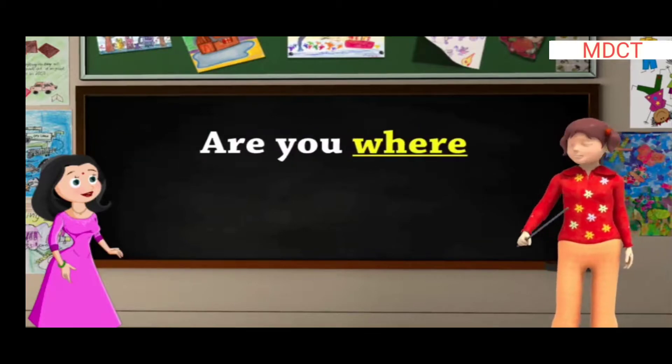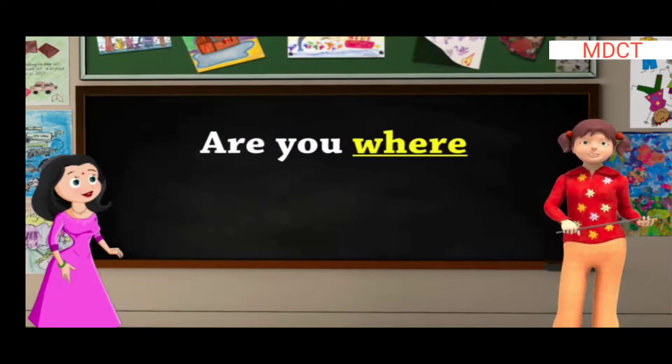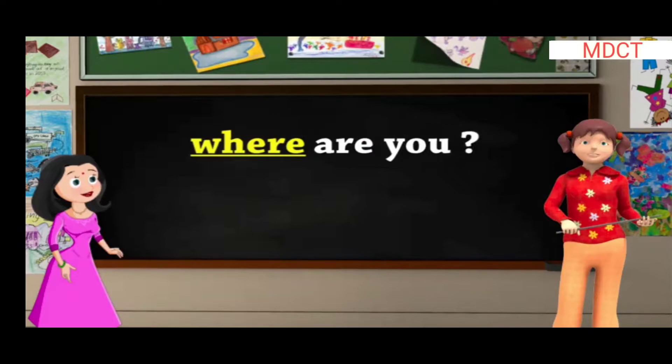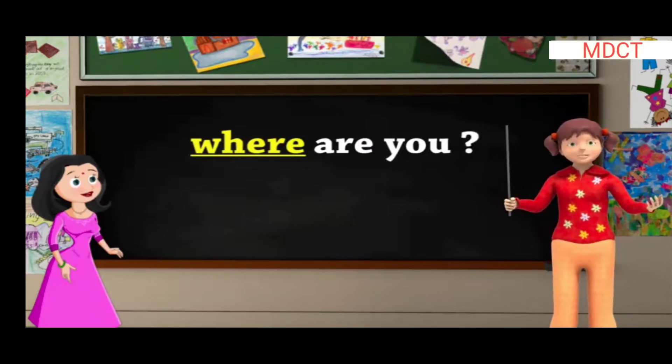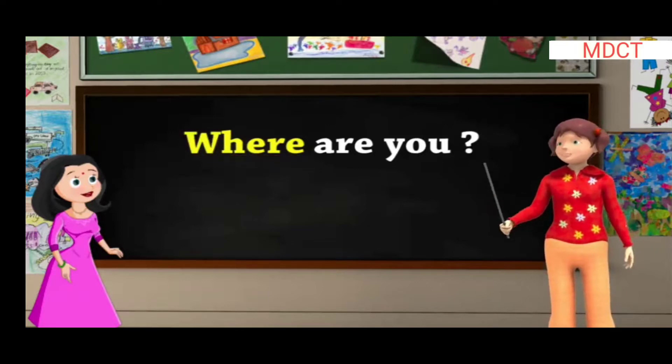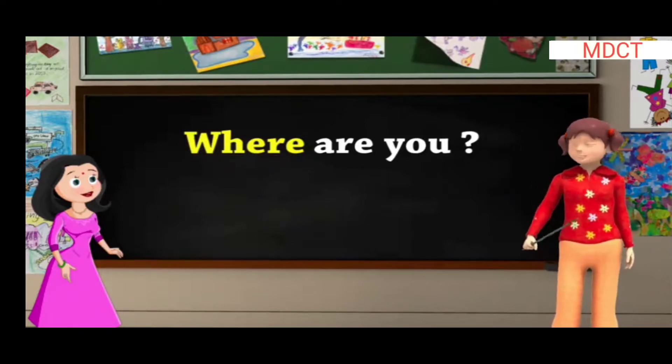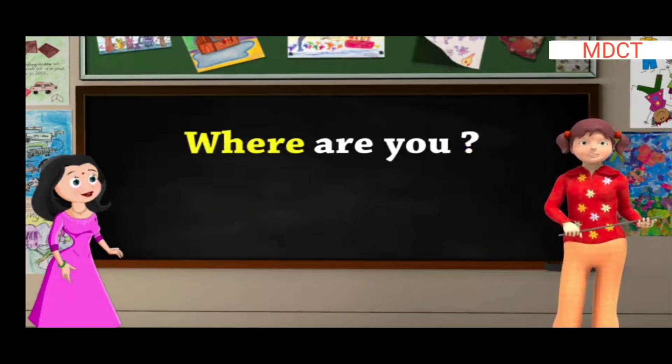Are you where? The sentence will be: Where are you? Children, since the sentence begins with 'where', W will be capital. Also, since a question is asked in the sentence, we put a question mark at the end.